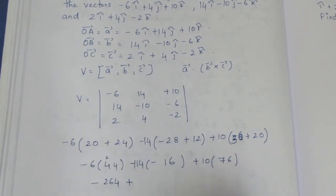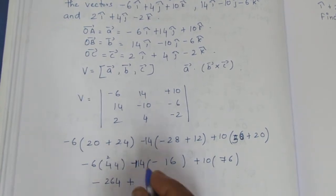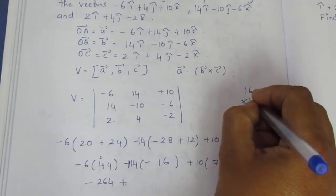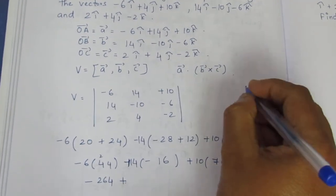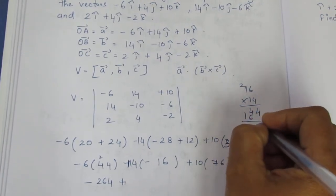14... Minus into 14, minus into minus is plus. 14 into 16. Six times four is 24, one is 4, so 16, 4.